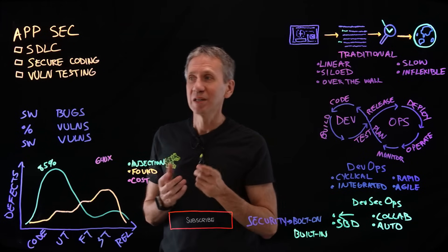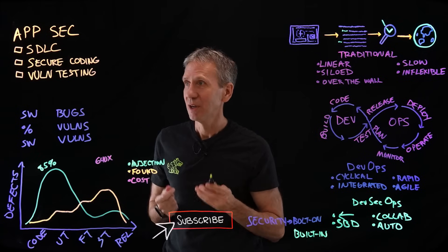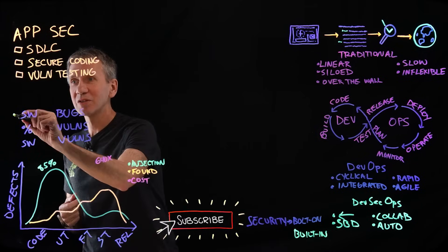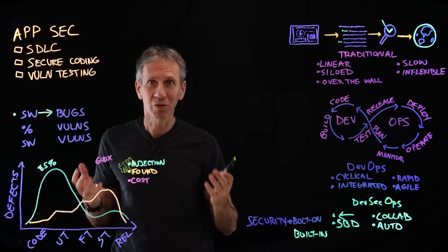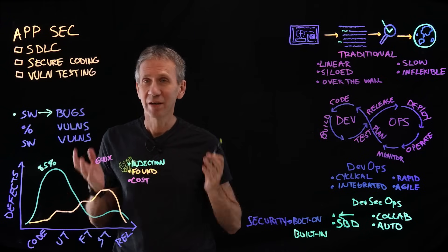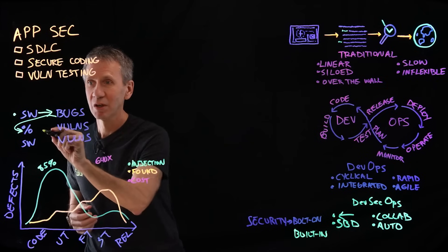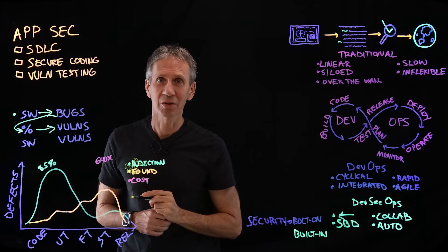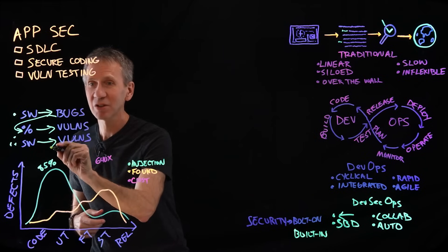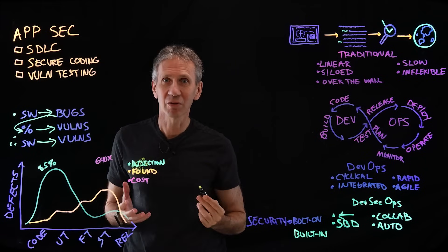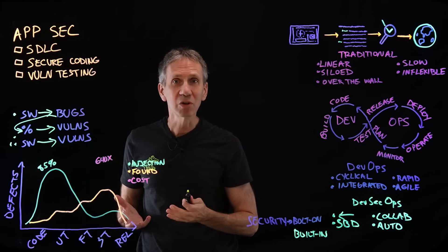What are some of the things that we need to consider? Why do we have to care? Well, it turns out that essentially all software has bugs. Nobody writes software of any real complexity that's error-free. And it turns out that some percentage of those bugs will be security vulnerabilities. So therefore, if you follow the logical conclusion, essentially all software is going to have security vulnerabilities in it.